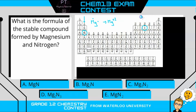Nitrogen, however, has five valence electrons, and so it's easier to gain three than to lose two, so it's going to have an ion of negative three, N³⁻. What we need to do is combine these ions together so that the compound is neutral.